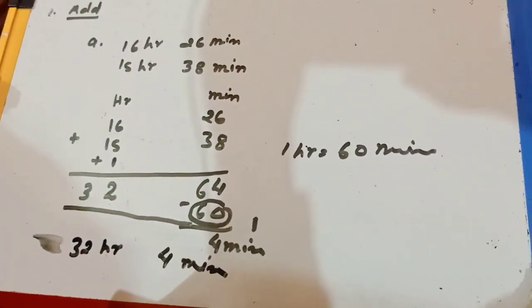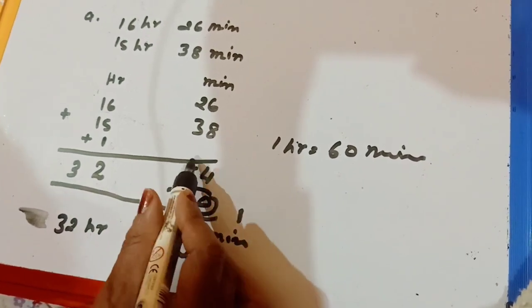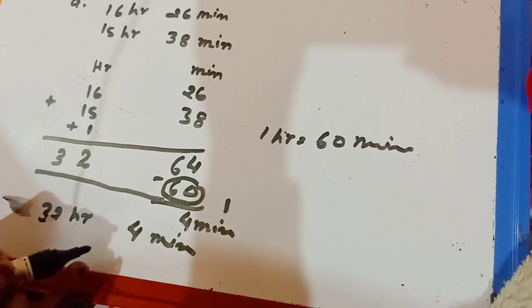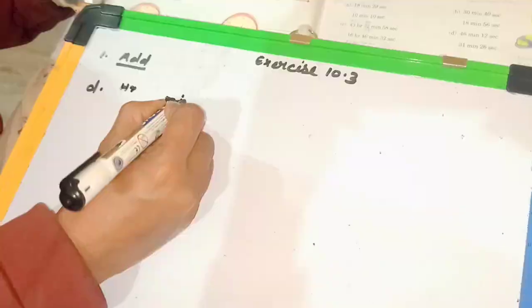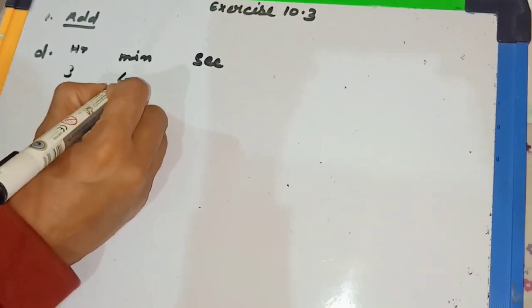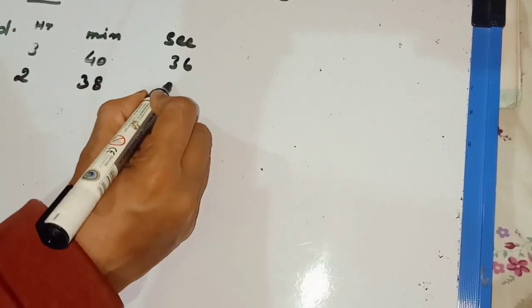I think it is clear. One more time: first you add, then you see how many hours you can find from the answer, then you add that 1 to hours to get the correct answer. Question numbers B and C are the same as question A, so you can do those. Question D is a little different. We arrange the question: hour, minute and second. Write 3 hours 40 minutes 36 seconds, then 2 hours 38 minutes 42 seconds, and put the plus sign to find the answer.